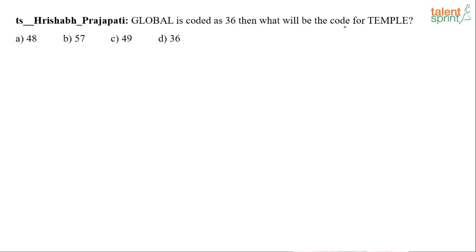Global is coded as 36, then what will be the code for temple? Now, we have tried many such questions already and these are all very old question types. But you never know. Coding and decoding is one topic where there are infinite ways of framing the question. So, you never know what the logic is. What do you think 36 could mean here? I think the first thing that all of us should and must try is the positioning here. Go by the letter positioning of the letters. 7th letter, 12th letter, 15th letter, second letter, first letter and 12th letter. I am sure all of you have learnt these numerical positions by heart. Numerical positions of all the letters in the alphabet.